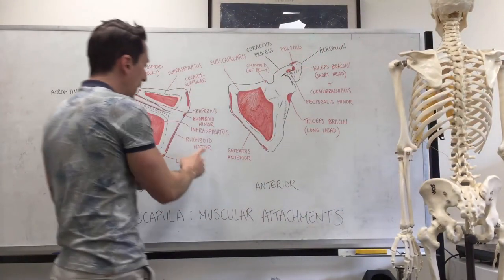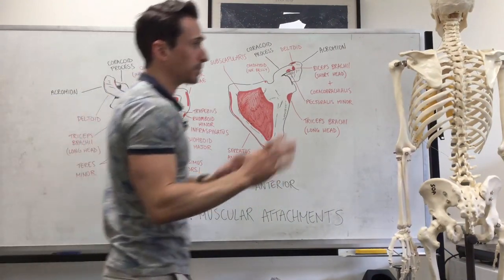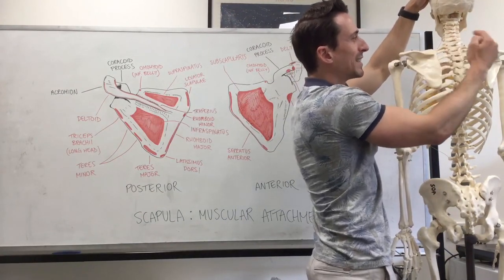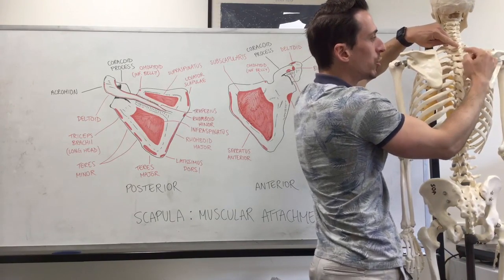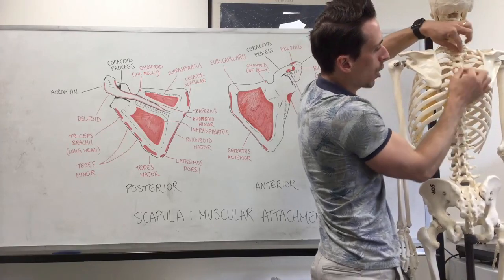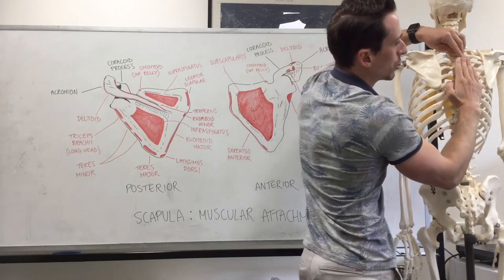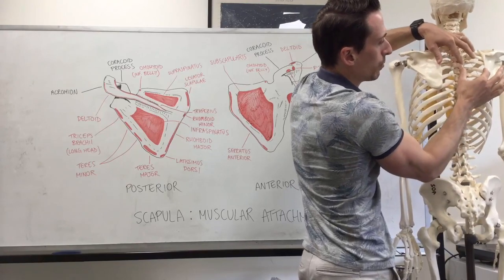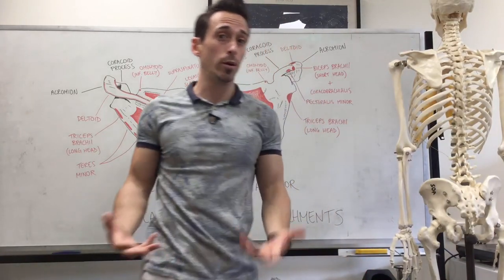Rhomboid major has a larger attachment site at the lowest medial border of the scapula. Since rhomboid minor originates at the lowest part of the nuchal ligament and C7–T1, rhomboid major's origin is T2 down to T5. It moves laterally and attaches to the medial border of the scapula. This is important because when we want to brace our shoulders and bring them back, this is predominantly a rhomboid major activity.